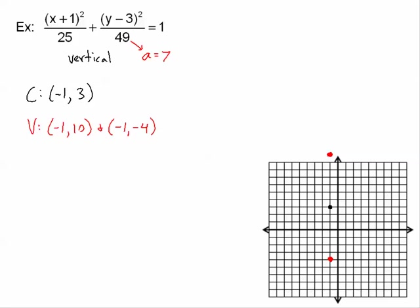For the co-vertices, b equals 5, the square root of 25. Count 5 units to the right and left from the center: the co-vertices are (4, 3) and (−6, 3).